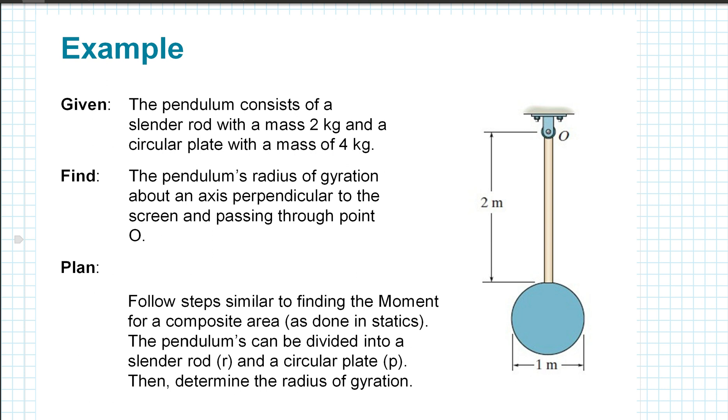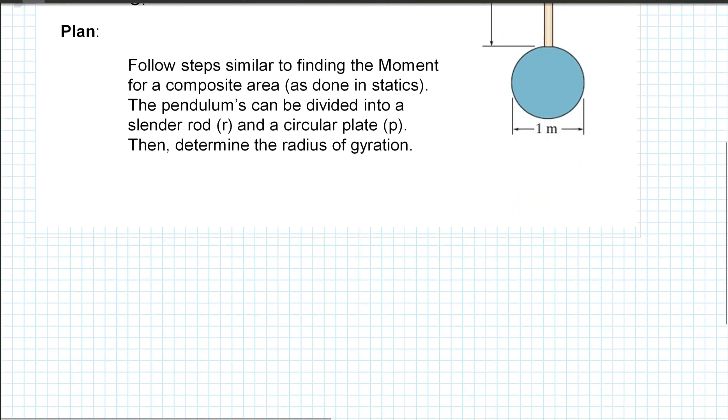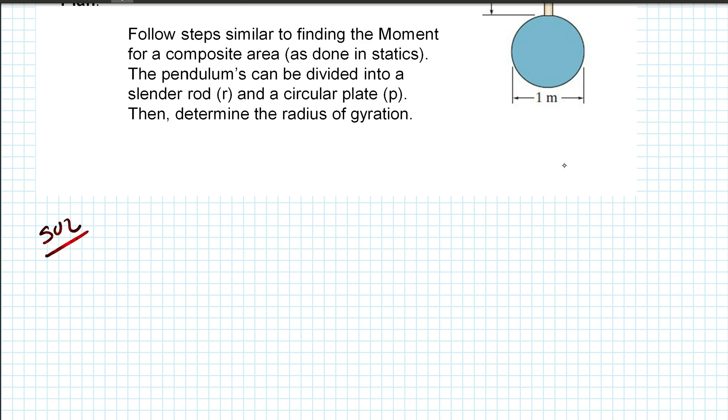The pendulum can be divided into a slender rod and a circular plate, and then we'll determine the radius of gyration. Let's go ahead and take a look at our solution. The center of mass for the rod will be at point G sub R from point O. The center of mass for the circular plate is at 1 meter, and it'll be G sub P, 2.5 meters from point O.